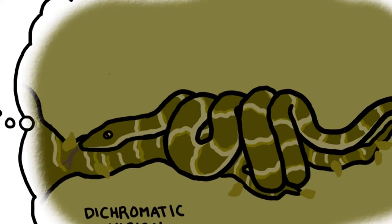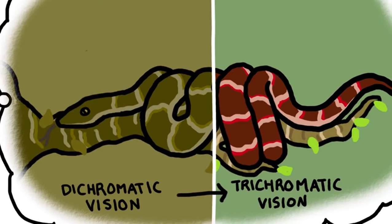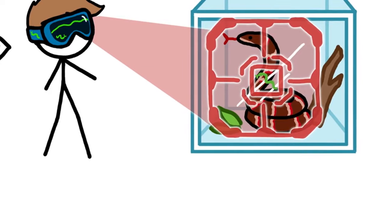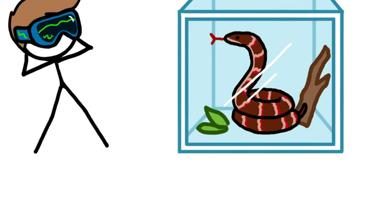Some researchers even think that we evolved our awesome color vision in part to help us successfully spot snakes. And there's some evidence that our sensitivity to snakes actually makes us prone to fearing them, but we don't yet know exactly how.